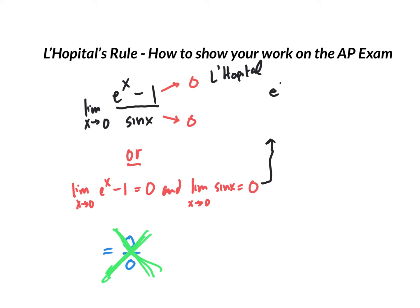You should say, well, the derivative of the top is e to the x. The derivative of the bottom is cosine x. Please remember, this isn't quotient rule. You're just finding the derivative of the top and the derivative of the bottom.